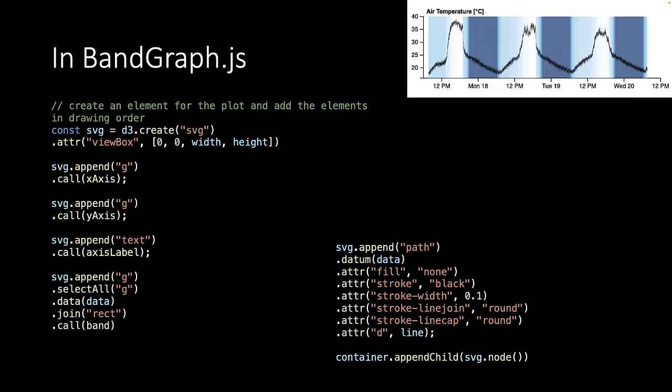Now that we have defined all elements, we can build up our SVG. We start by defining the canvas, and then appending a group for the X axis, a group for the Y axis, a text element for the axis label, a group for the color band, and a path which is drawn using our line definition. In the end, we append the SVG to our container.